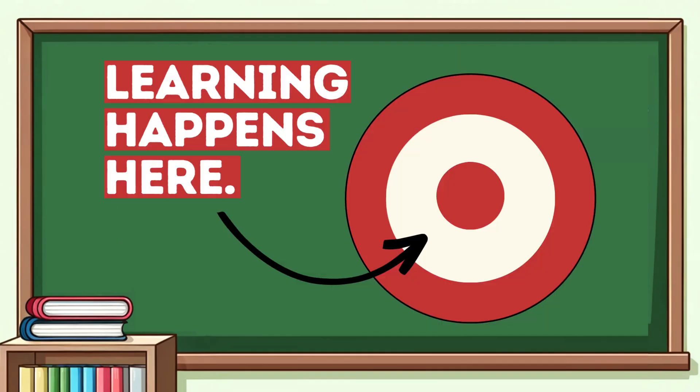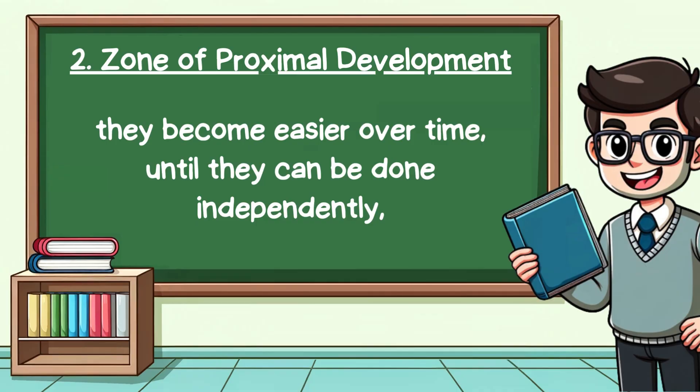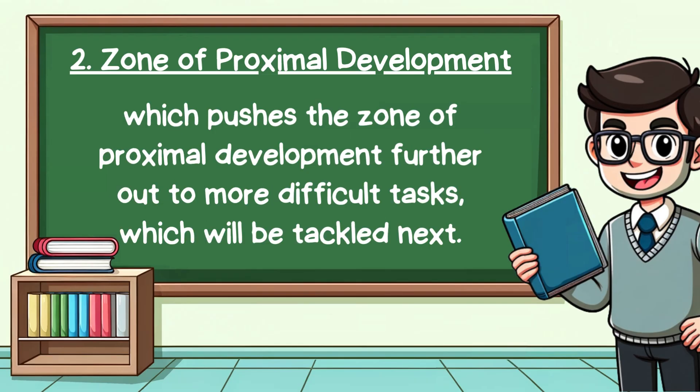Vygotsky argued that educators should target their educational materials at that middle zone, known as the zone of proximal development, where tasks are almost within reach for the student. By practicing these just-too-hard tasks with a more knowledgeable other, they become easier over time until they can be done independently, which pushes the zone of proximal development further out to more difficult tasks to be tackled next.